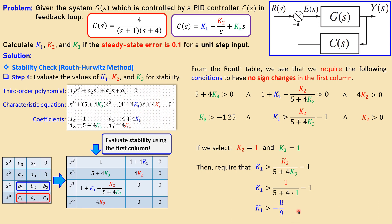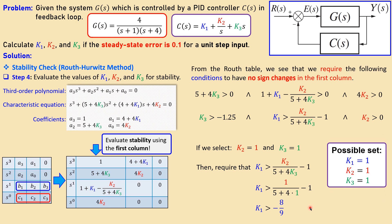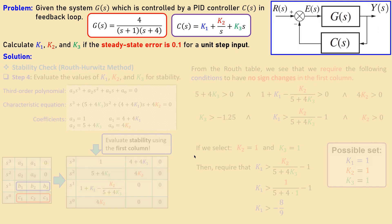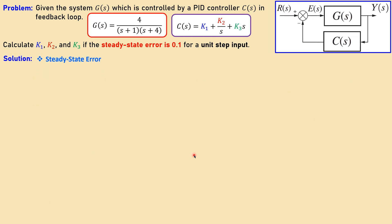For example, if we select k2 = 1 (larger than zero) and k3 = 1 (larger than −1.25), then substituting into the formula for k1 gives the condition that k1 must be greater than −8/9. Taking exactly that boundary would give marginal stability with oscillation at the output. So choosing k1 = 1 gives us a possible stable set: k1 = k2 = k3 = 1. That completes the stability check, but we also need to verify the steady-state error.